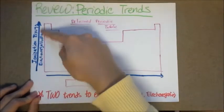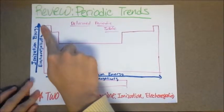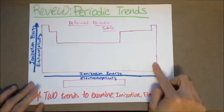Ionization energy and electronegativity increases as you go up the periodic table and increases as you go from left to right of the periodic table.